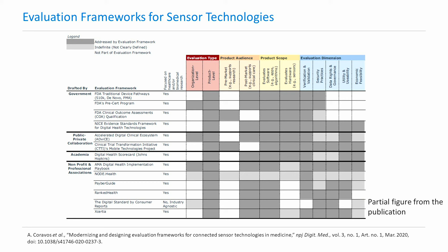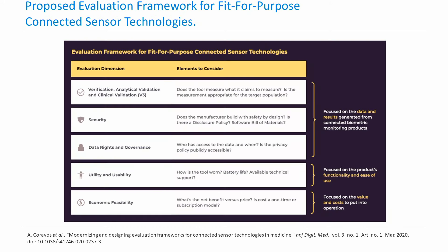This is a snapshot of the landscape of emerging frameworks. More details can be found in the publication provided in the reference. The next framework is the evaluation framework for fit-for-purpose. To provide a brief overview, this framework encompasses the V3 framework that we initially discussed. However, it also adds four more sections to it, which are meant to assess security, data rights and governance, utility and usability, and economic feasibility. With this, we are going to conclude our discussion on the frameworks.